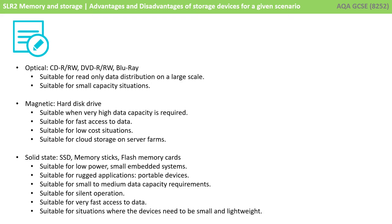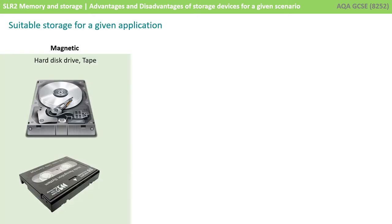Our three main categories of storage are optical, magnetic, and solid state. Here's a brief recap of the pros and cons of optical, magnetic, and solid state storage from our previous video. Let's consider each of the devices and how they compare.